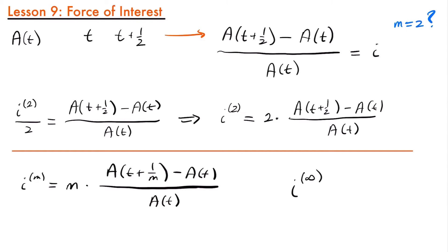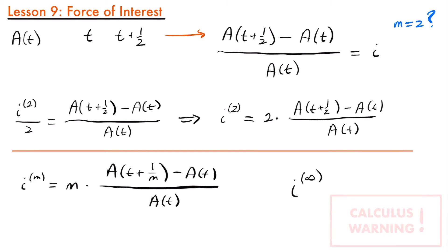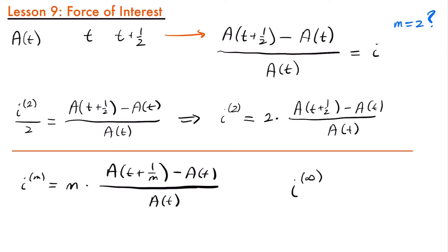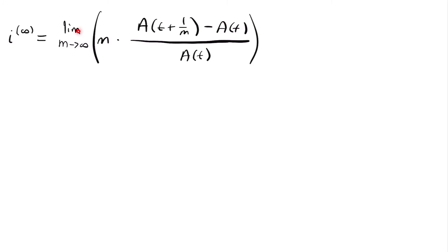We can't simply plug in infinity since it's not a number, but this is where calculus comes into play. Consider this your calculus warning — we're going to be using calculus from here on out. The force of interest is that nominal rate convertible infinitely, so let's find it by taking the limit of this function as m approaches infinity. The nominal interest rate compounded infinitely equals the limit as m approaches infinity of m times [A(t + 1/m) minus A(t)] divided by A(t).